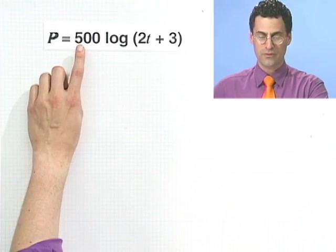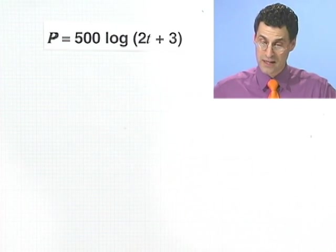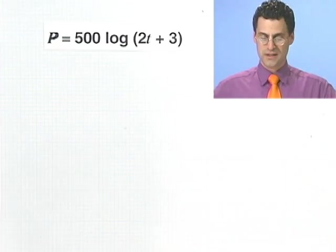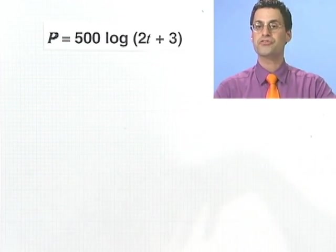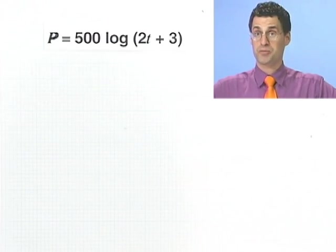is equal to 500 times the log of 2t plus 3, where t represents the number of months since these used car dealerships were first introduced into the population, and they started to multiply, basically, just like an animal species would.